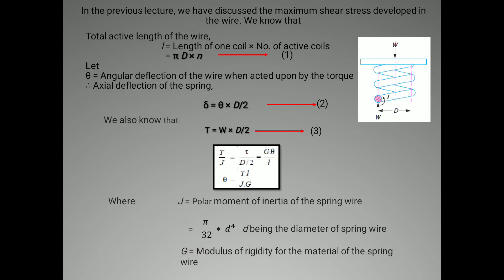Now let us see the deflection of a helical compression spring. The total active length of wire is: L = π D × n, where π D is the circumferential length of one coil and n is the number of active coils. Keep this as equation number 1.